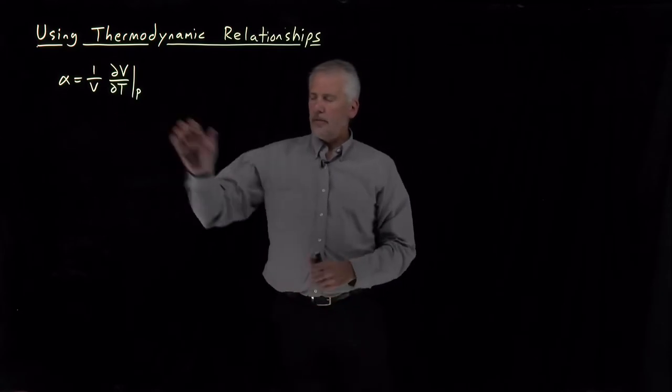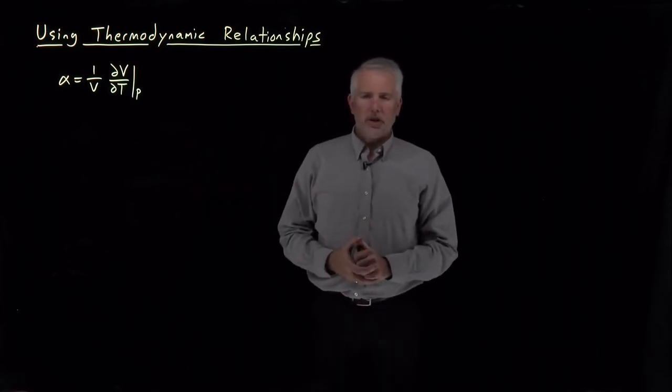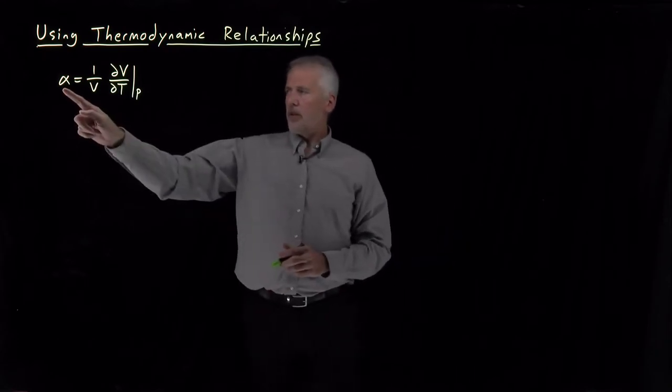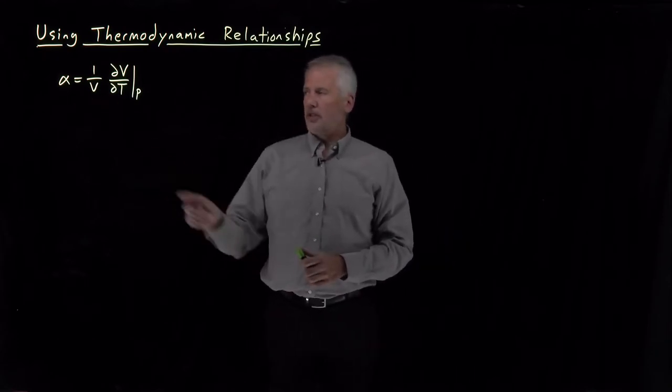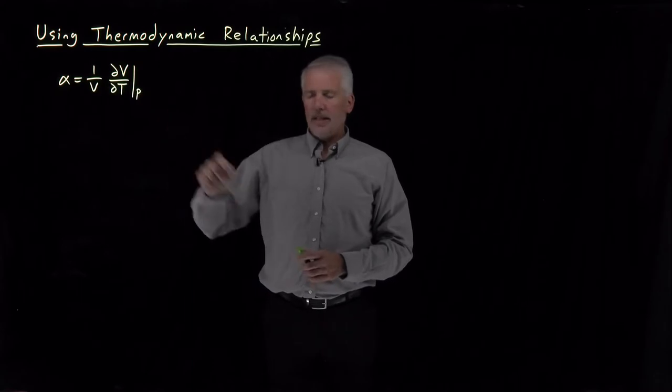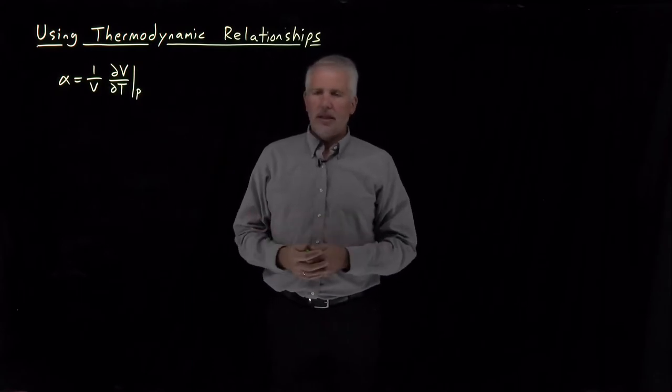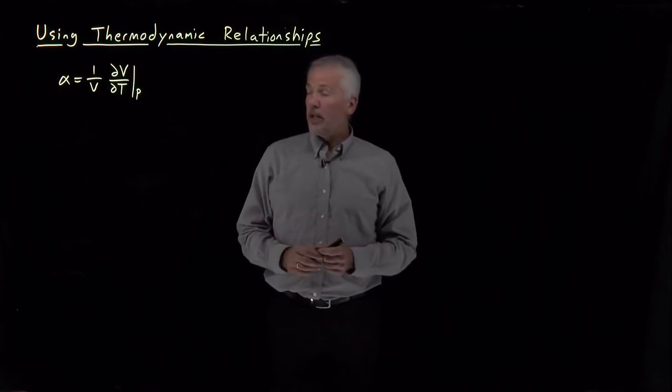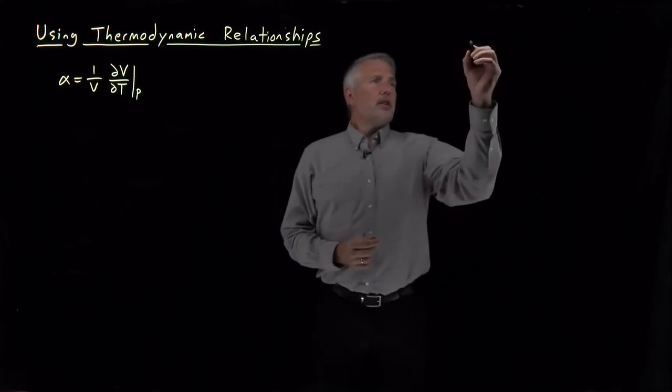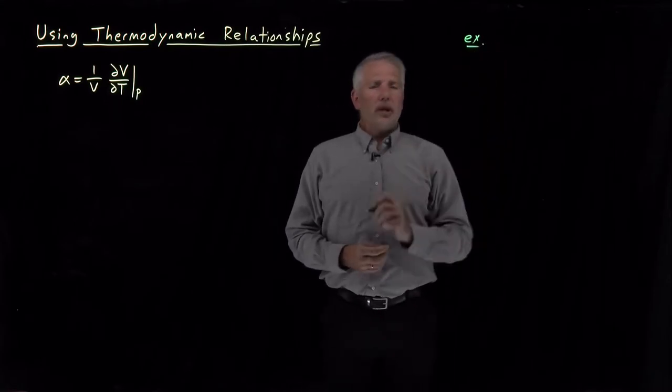Now that we have a collection of different thermodynamic relationships, what is it exactly that we're going to do with them? Suppose we know that the thermal expansion coefficient is defined this way, 1 over V dV dT at constant P. How is that useful to us? To explain that, we'll work a numerical example.